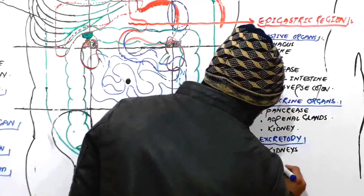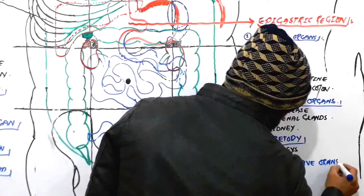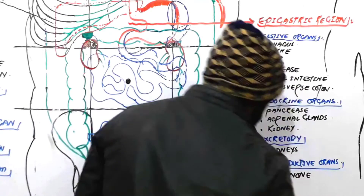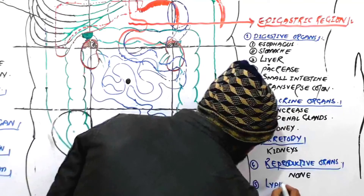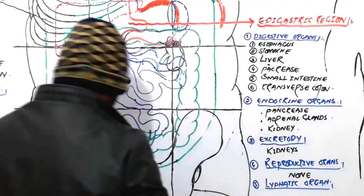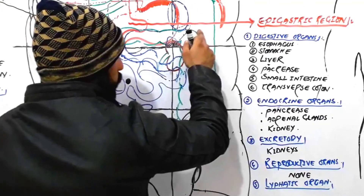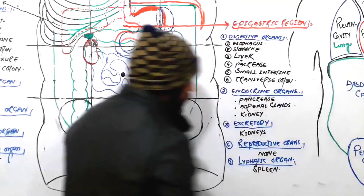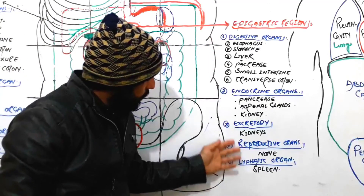Are there any reproductive organs in the epigastric region? No — we do not find any reproductive organ in the epigastric region. The last group to consider is lymphatic organs. Are any lymphatic organs found in the epigastric region? Yes — look carefully, we have our friend the spleen. Some parts of the spleen are found in the epigastric region, while more parts of it are found in the left hypochondric region. So we should not forget that the spleen is also partially present in the epigastric region.